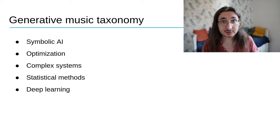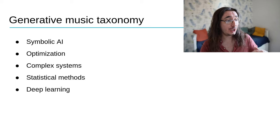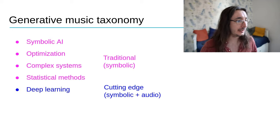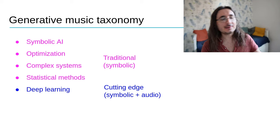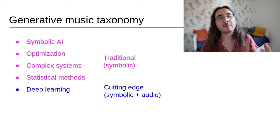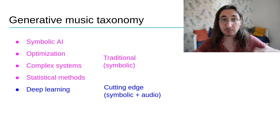Here's the taxonomy of different techniques for generative music. I have five high-level categories: symbolic AI, optimization techniques, complex systems, statistical methods, and deep learning. The first four I call traditional — we've been using them one way or another for 50-plus years, mainly in a symbolic capacity to generate symbolic scores.